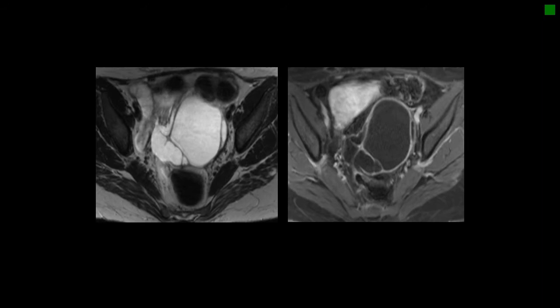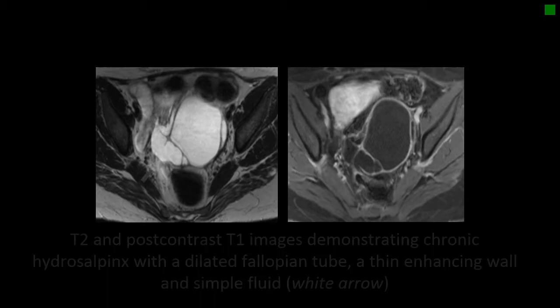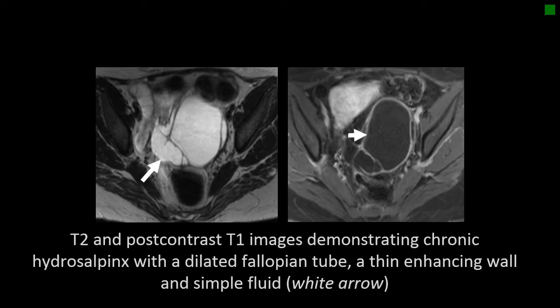This is a nice example of hydrosalpinx. We see a dilated, complex, fluid-filled structure on T2 and post-contrast T1 images. It has a thin wall and is showing enhancement. As you scroll through, you can see this is one big fluid collection — one dilated fallopian tube. This was asymmetric, and so this is a case of subclinical PID with impressive hydrosalpinx.